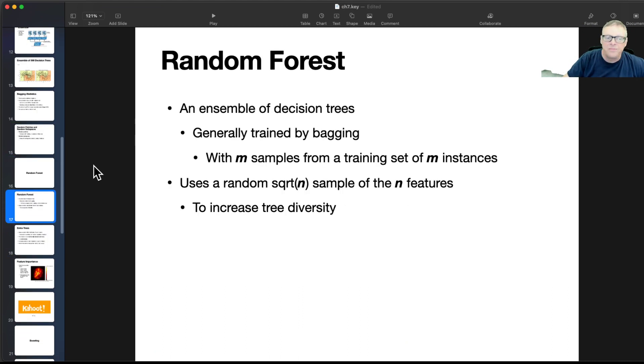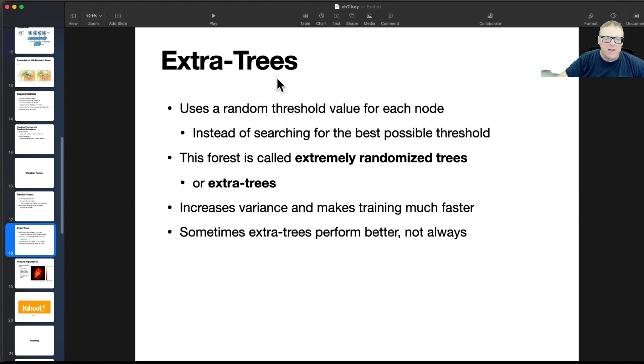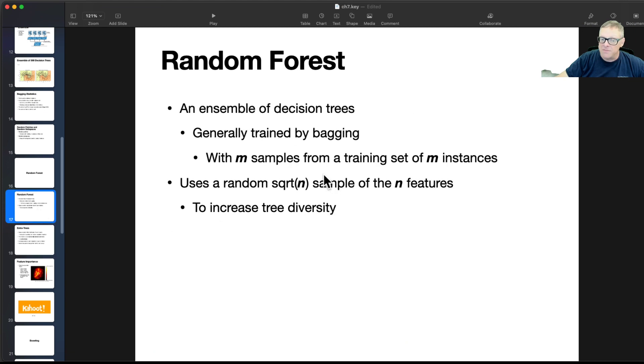All right. And so a random forest is an ensemble of decision trees usually done by bagging where you draw m samples from a training set of m instances, and you can do this as many times as you like, and you'll get a different m samples. Each sample will have about two-thirds of them used. It'll be a different two-thirds each time and a different number of the ones that are doubled up. So, all right, you use a random sample of the features, only the square root of the number of features, and that will increase tree diversity. Even if you use the same samples, you use different features of them, so you'll have very different input data for each of your models. All right. So that's one way to make them, and clearly you can make as many as you want this way.